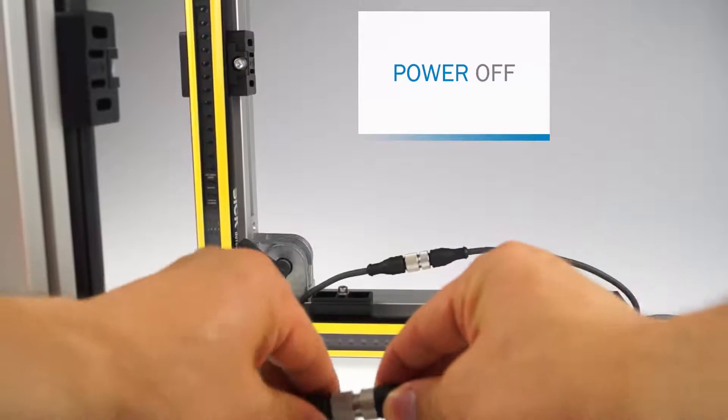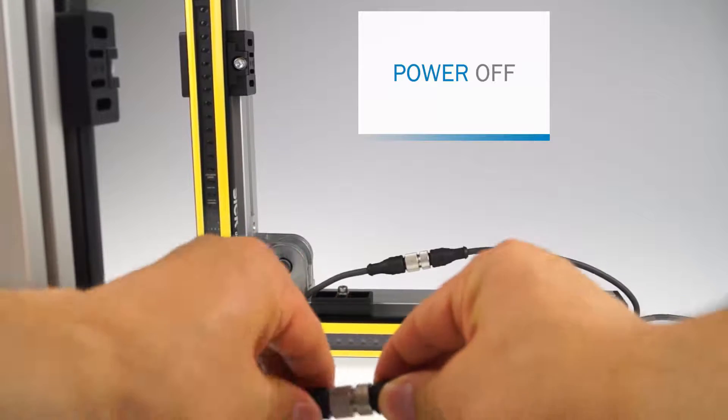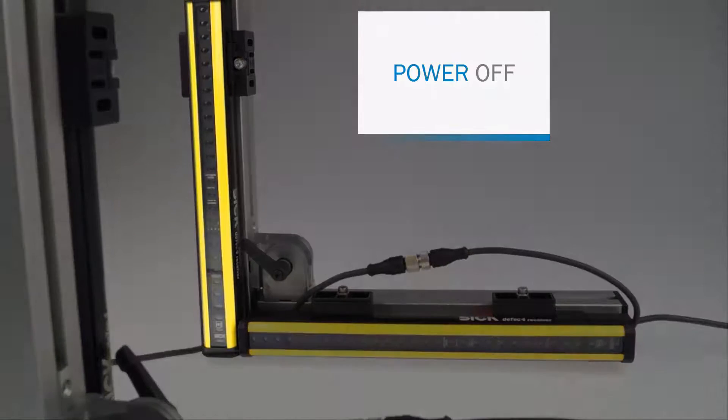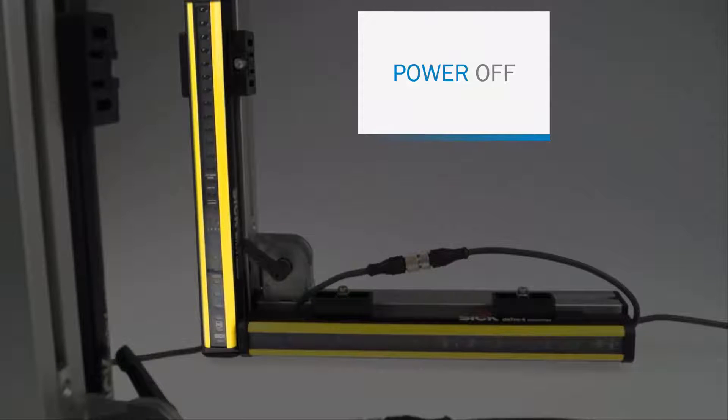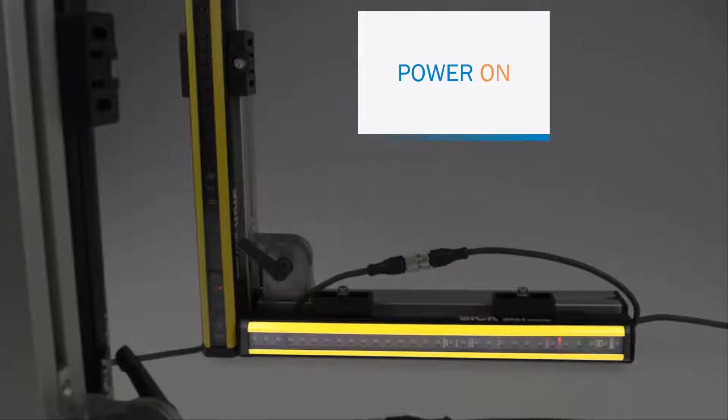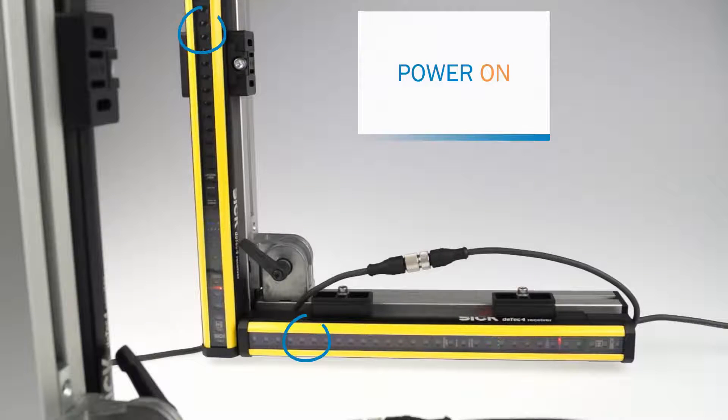If everything is wired correctly, you can connect the system with the power supply again. The devices which are connected directly to the power supply represent the host devices, while all other devices are guest devices. Now, the field LEDs of the devices are flashing green. This is the sign that the devices have entered the configuration mode and the cascading has been successful.